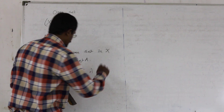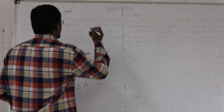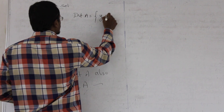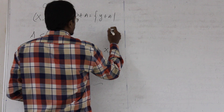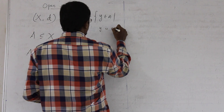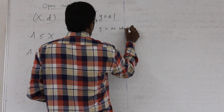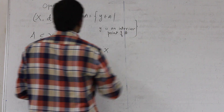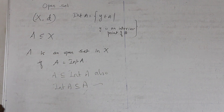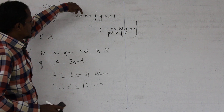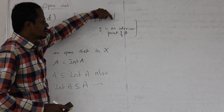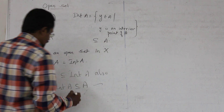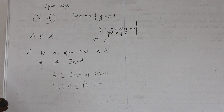One of these inclusions is obvious: interior(A) ⊆ A always holds. This is because the interior of A is the set of points in A which are interior points. Since we are collecting those points from A which satisfy an additional property, it is obviously a subset of A.